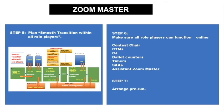Step 5: smooth transition within all the role players. We need to think through every flow, and in any flow there are two ends. Make sure both ends of the flow are closely communicated, connected, and coordinated in order to make a smooth transition. Everyone knows exactly what happens next and stands by for their turn, especially during the contest — the stage transition must run very smoothly.